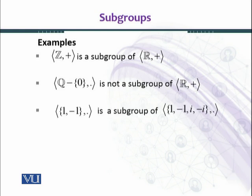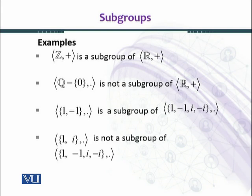Here we are considering a set {1, -1} which is a subgroup of {1, -1, i, -i} under usual multiplication. But {1, i} is not a subgroup of {1, -1, i, -i} under usual multiplication.